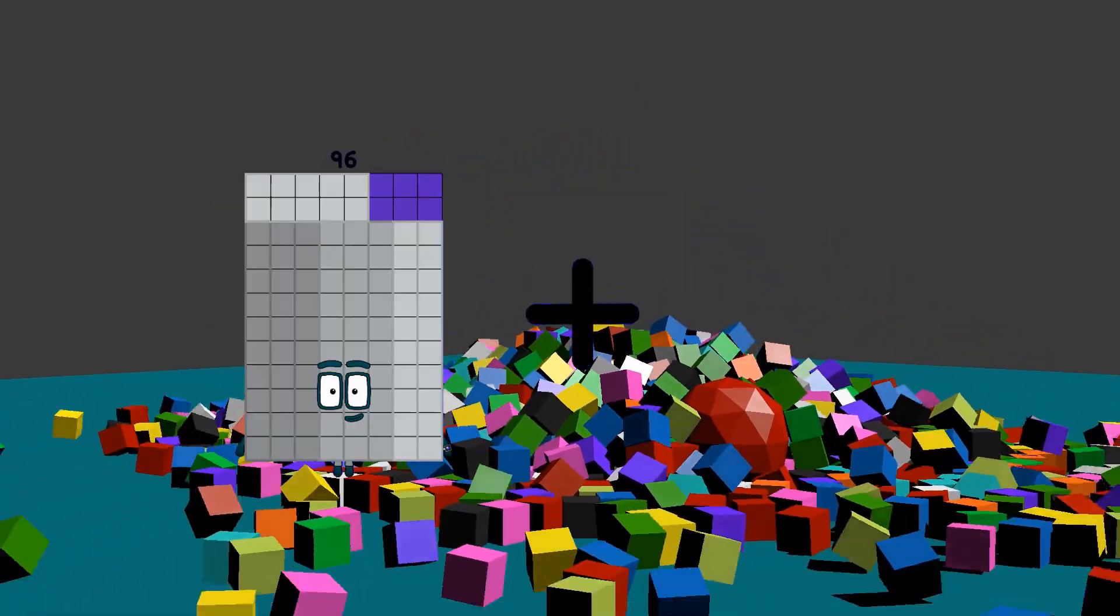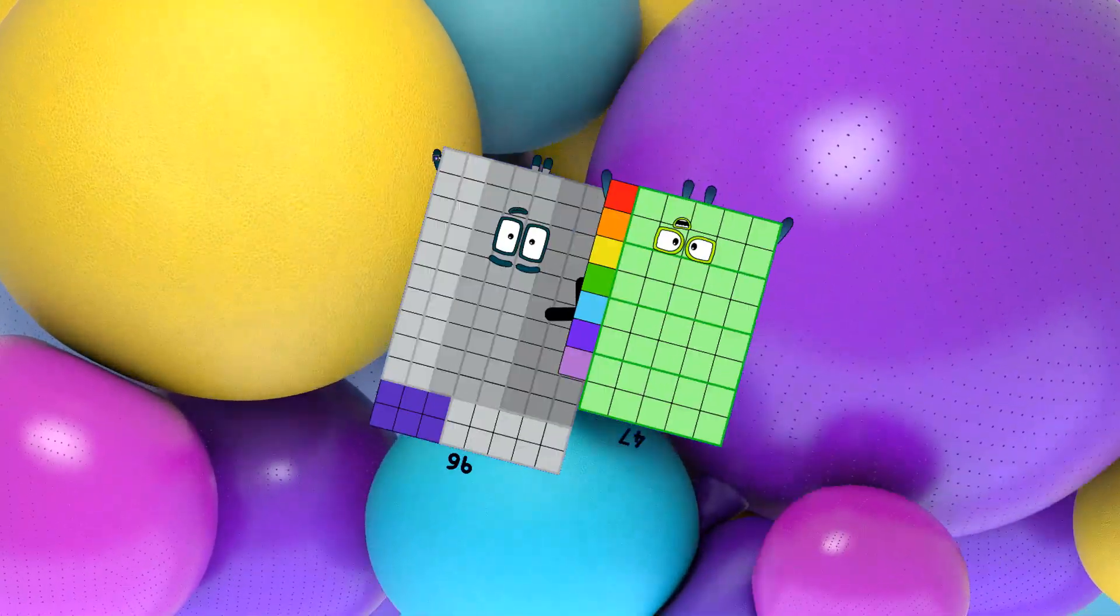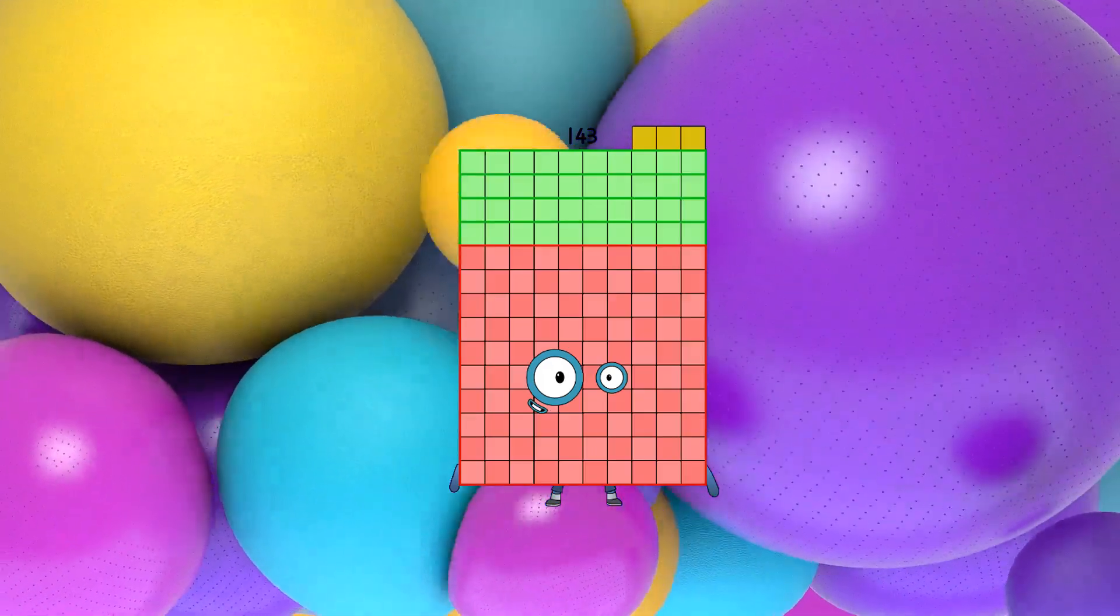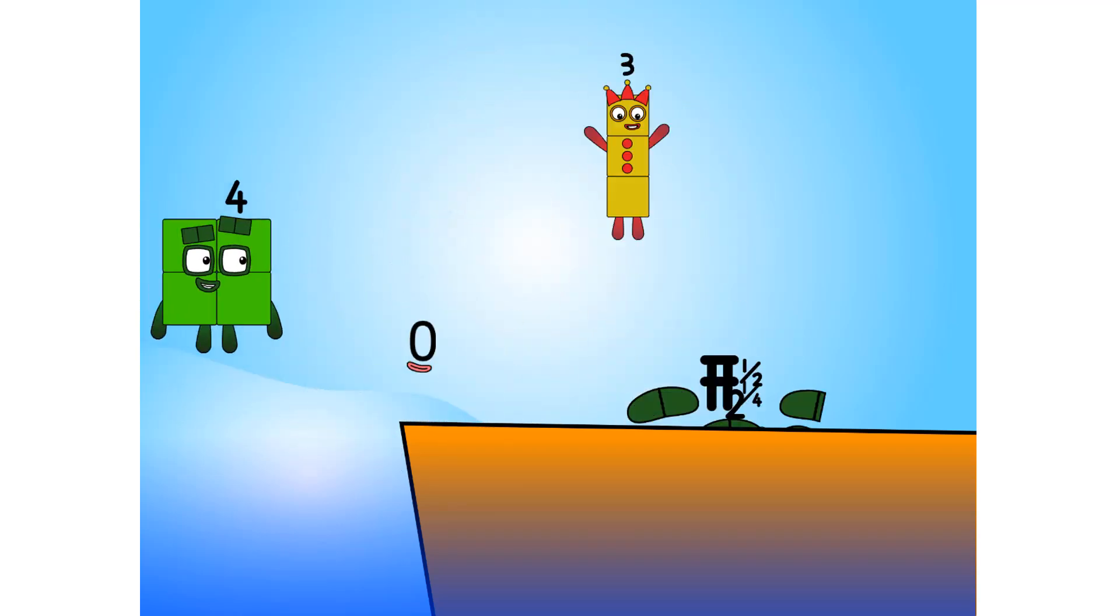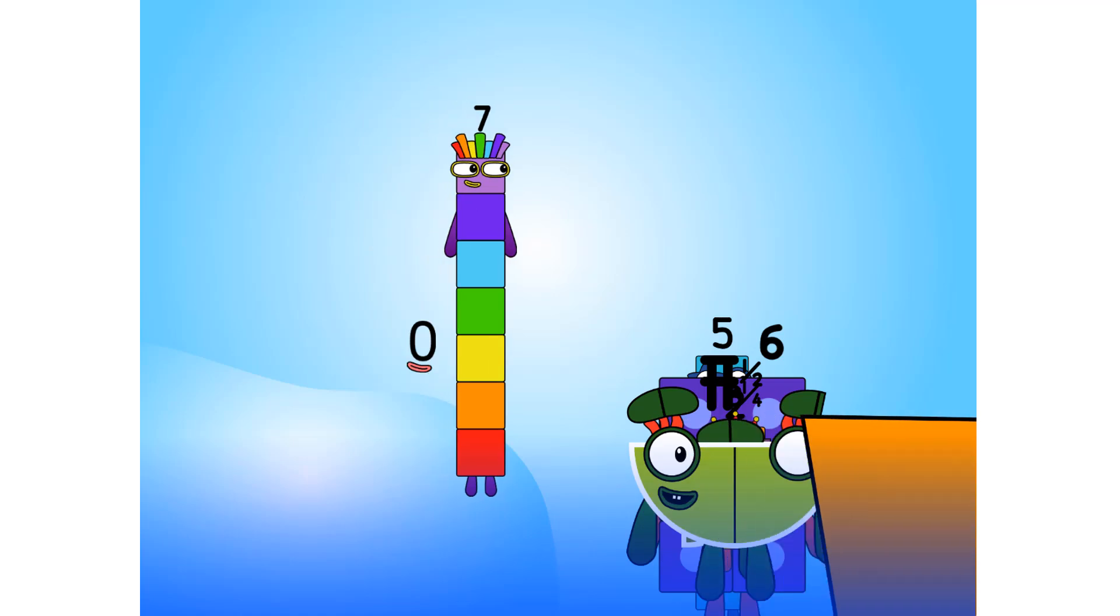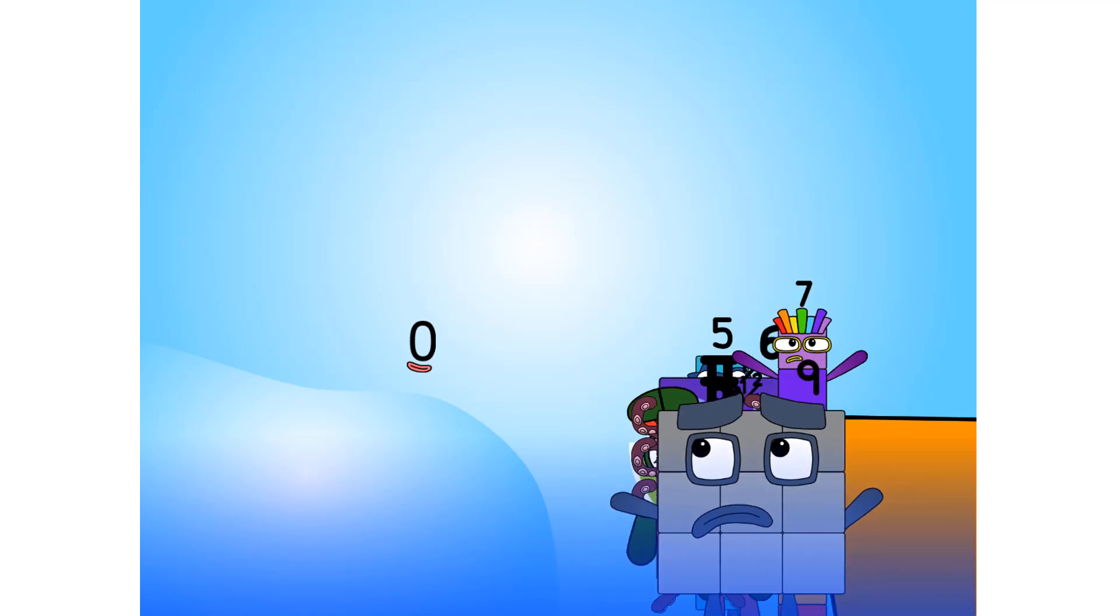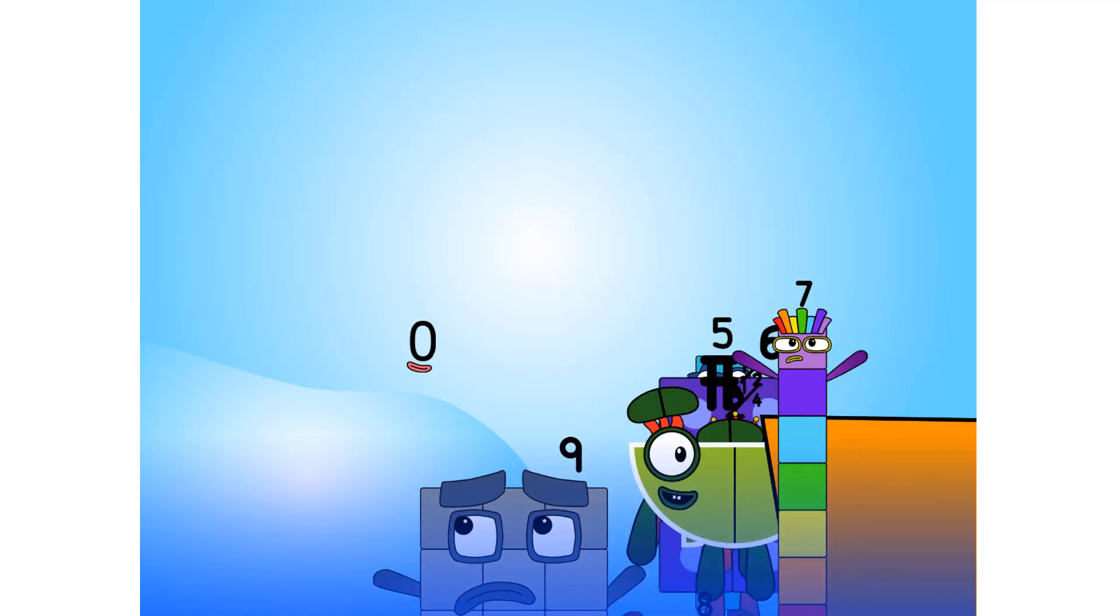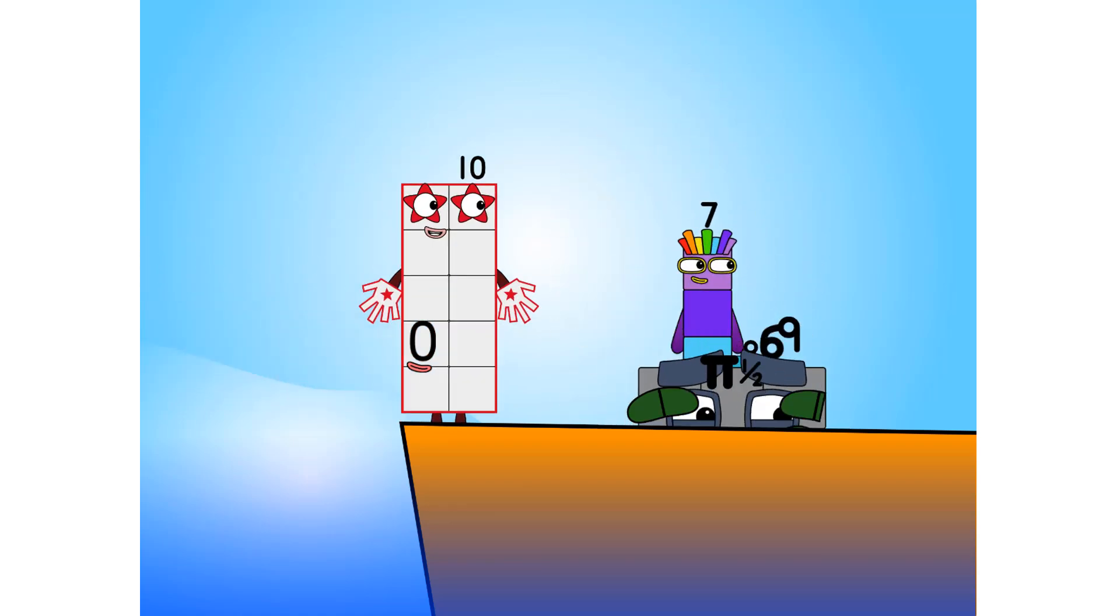96 plus 47 equals 143. All right me hearties, into the boat you go. I have numbers 1, 2, move along lads, 3, 4, 5, 6, 7, step lively, 8, smartly now, move along, 9. Blow me down, numbers overboard! Hang on lads, it's a good thing you know how to swim. Let's go me hearties, 10.